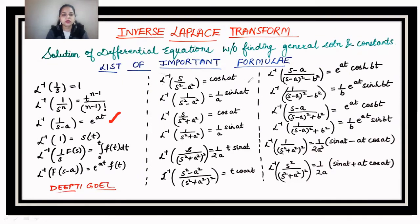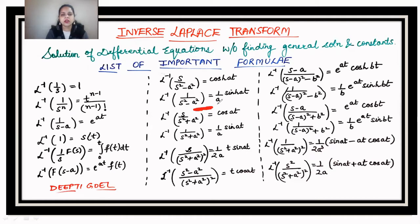The Laplace inverse of s/(s²−a²) is cosh(at). For the Laplace inverse of a/(s²−a²), the answer is sinh(at). If there is no 'a' in the numerator, the answer must be divided by a, giving (1/a)sinh(at). For the trigonometric functions: Laplace inverse of s/(s²+a²) equals cos(at), and for a/(s²+a²) the answer is sin(at). For 1/(s²+a²), the Laplace inverse is (1/a)sin(at).